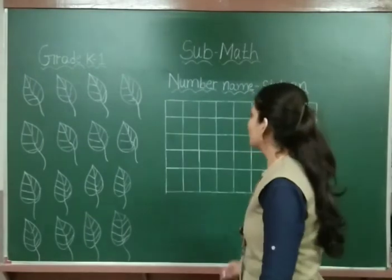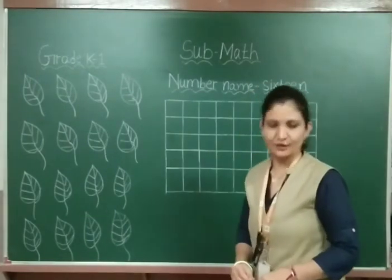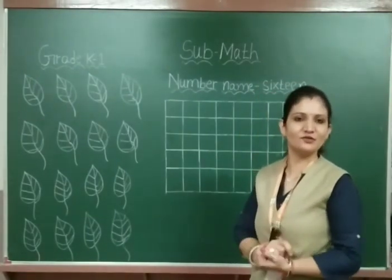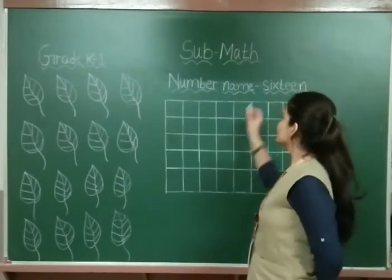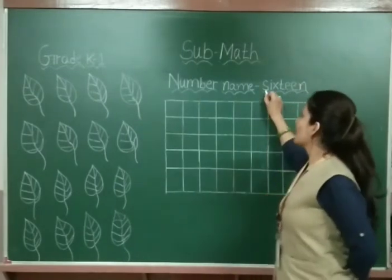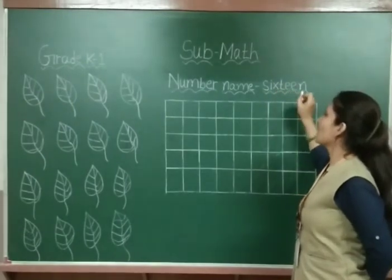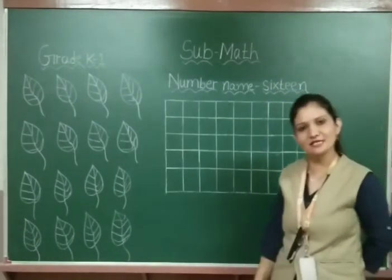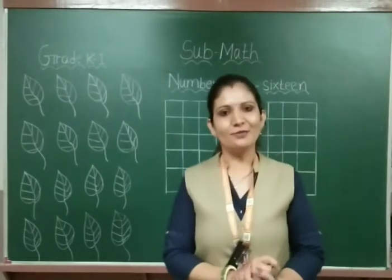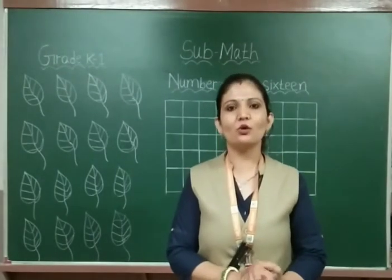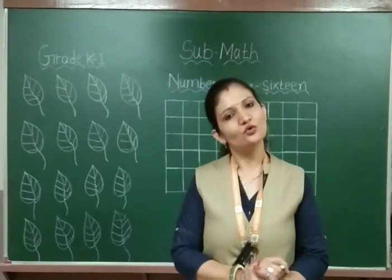Now, in the last video we did number name 15. Now after 15, which number name will come? That is 16 — S-I-X-T-E-E-N, 16. Before starting number 16, let's do a quick revision of number names 11 to 15.